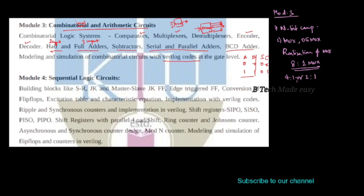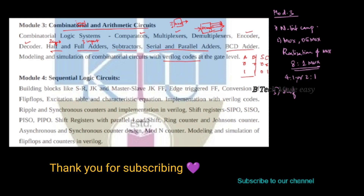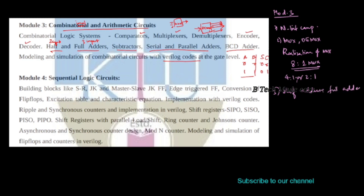We also need to look at half adders and full adders at the gate level. Half adders plus full adders — we have to understand this model thoroughly. That concludes the overview of the modules.